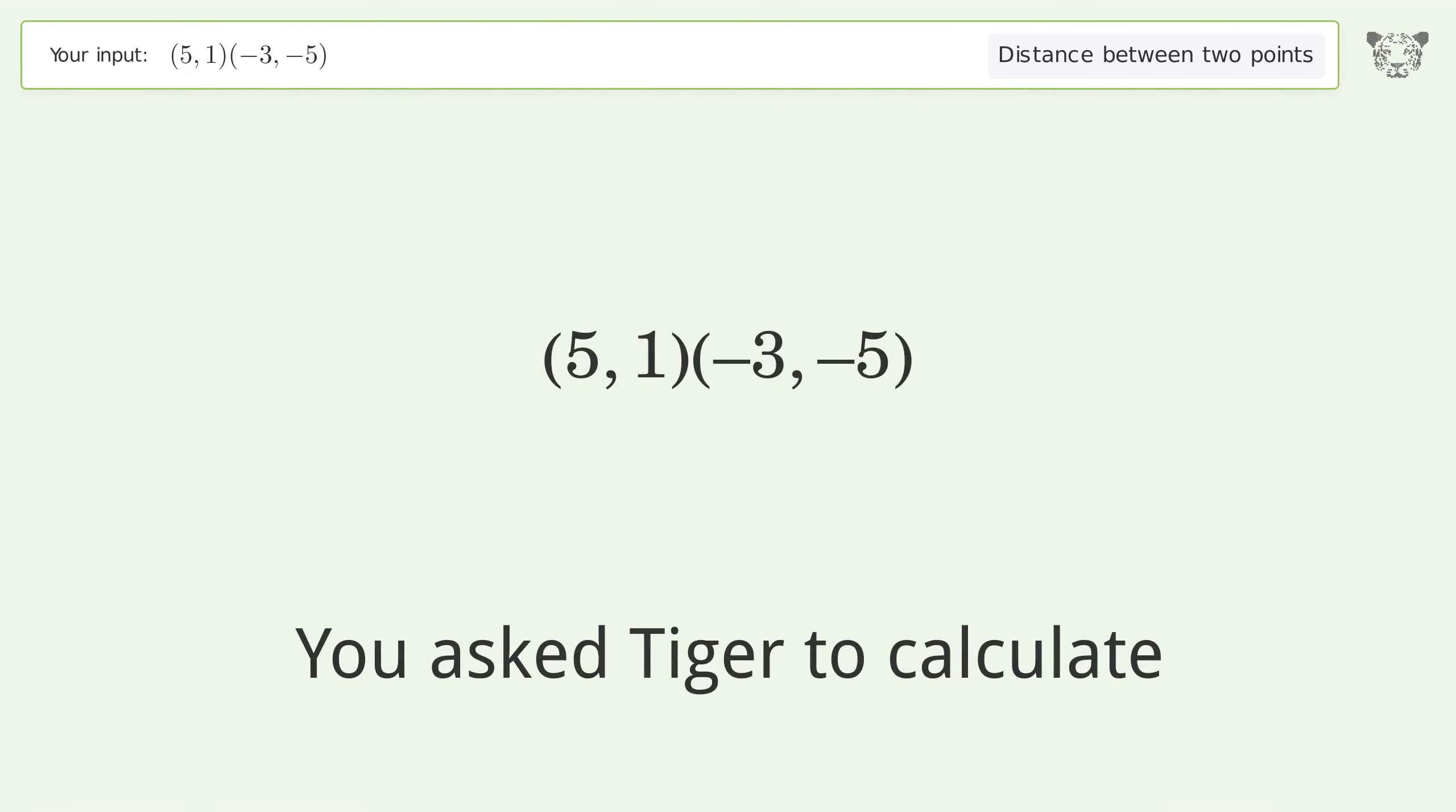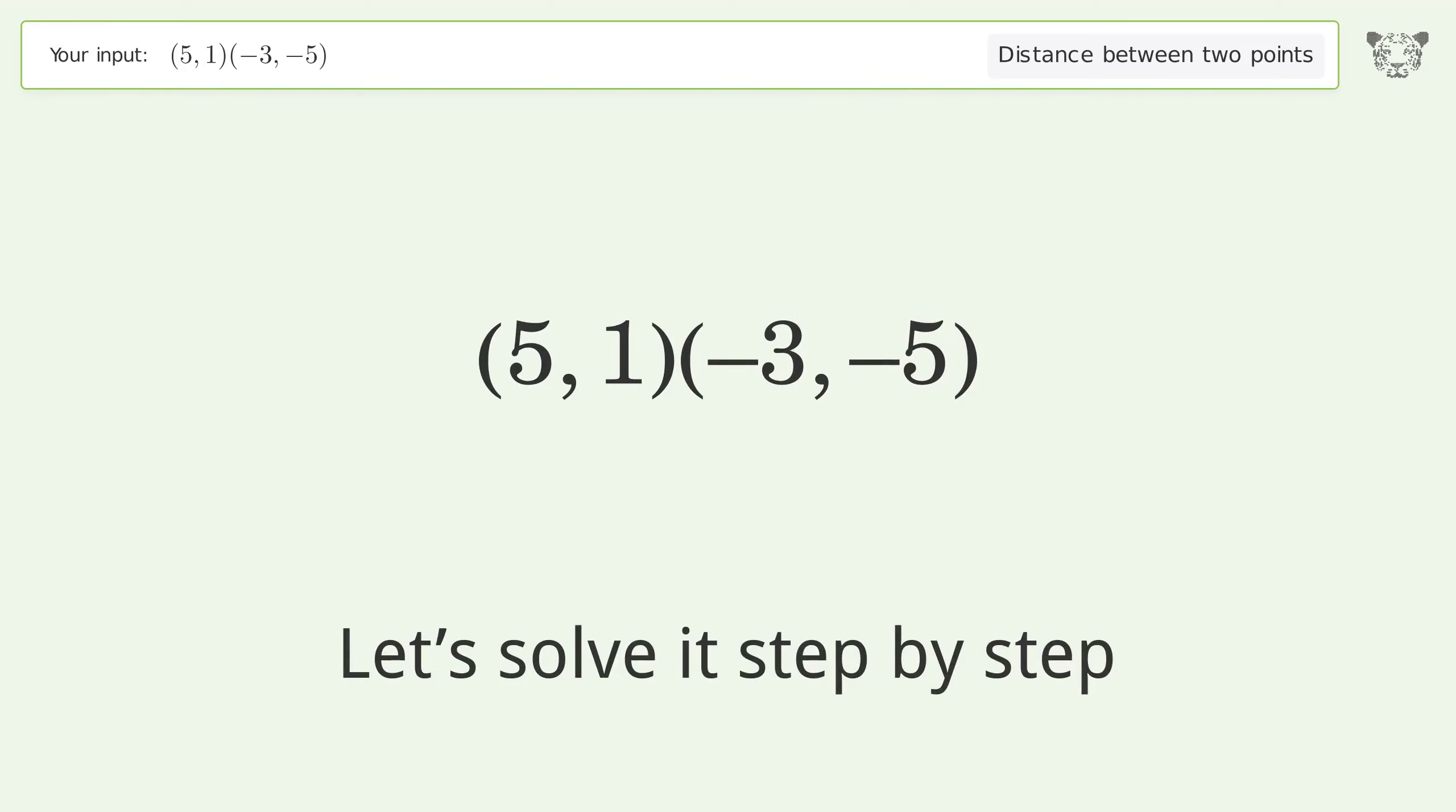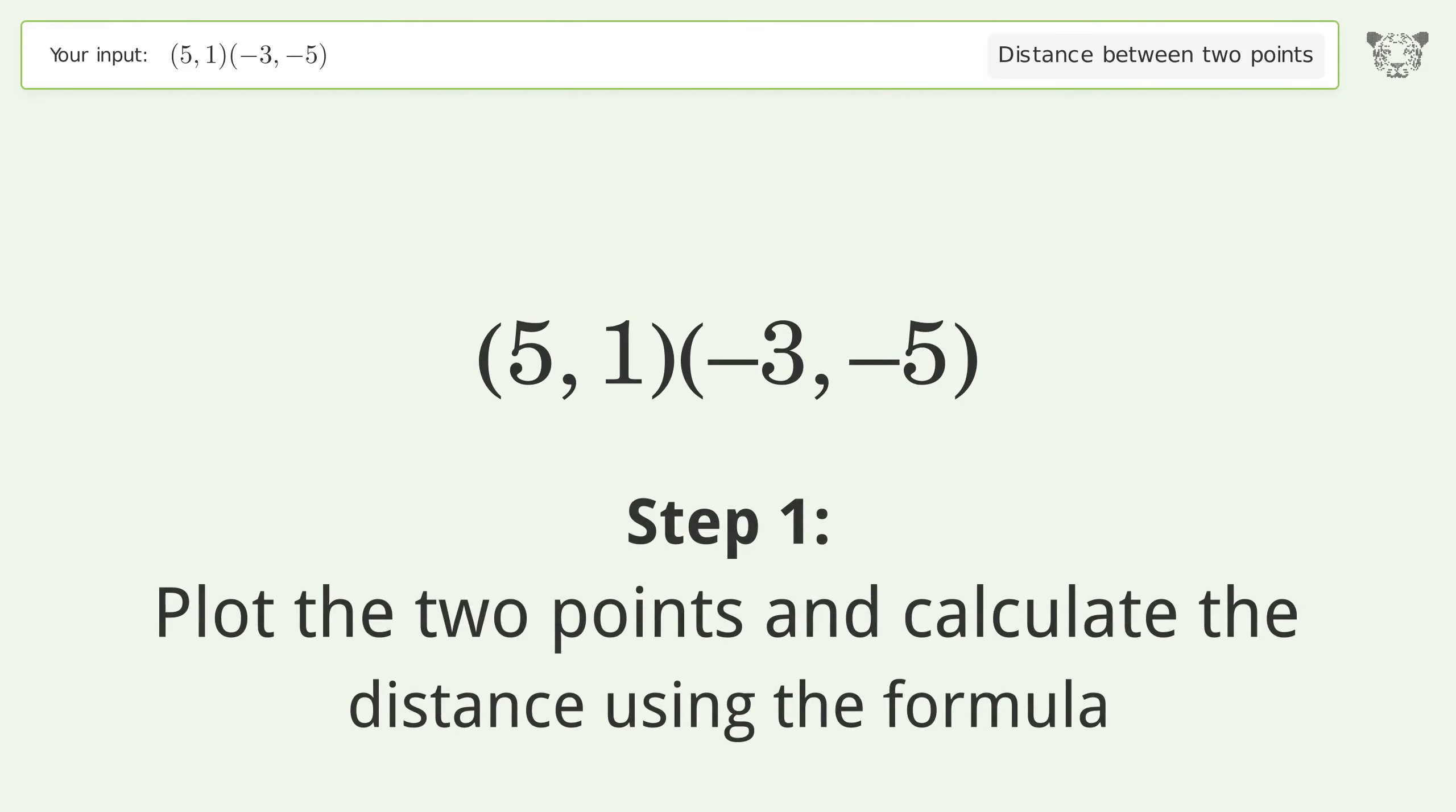To calculate the distance between two points (5,1) and (-3,-5), the answer is the square root of 100, or 10. Let's solve it step by step by plotting the two points and calculating the distance using the formula.